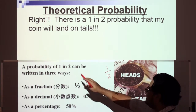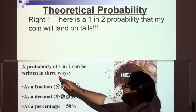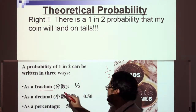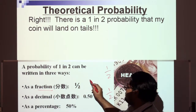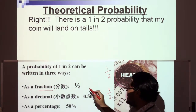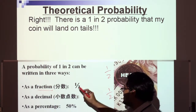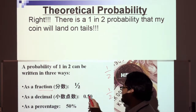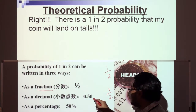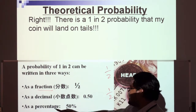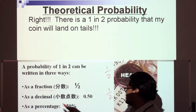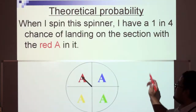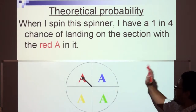A probability of one in two can be written in three ways: as a fraction — one over two, or one half; as a decimal — 0.5; and as a percentage — 50%.